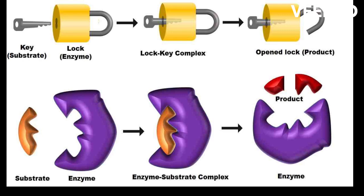An example of this is the enzyme lactase, which catalyzes the breakdown of lactose, the substrate, into glucose and galactose. The active site of lactase is specifically shaped to fit the lactose molecule, allowing for efficient catalysis of the reaction.